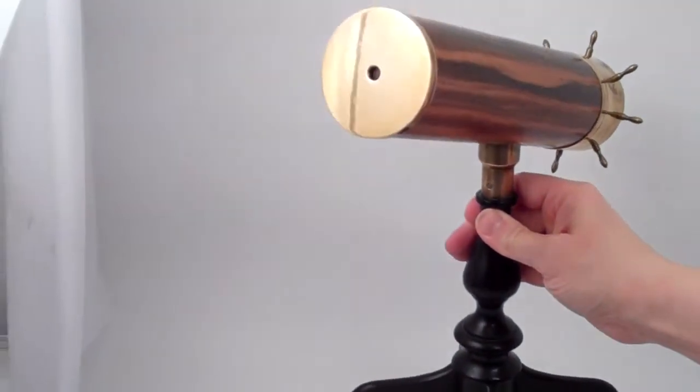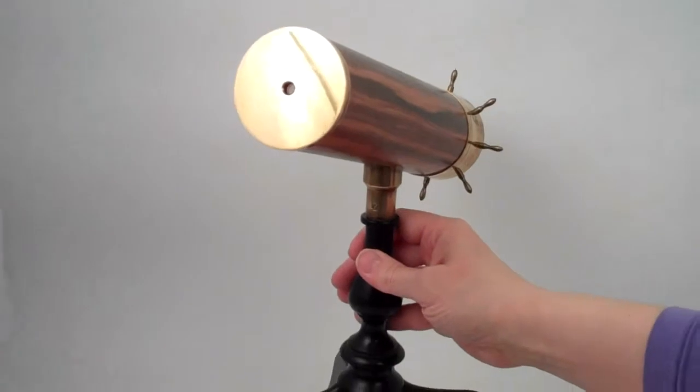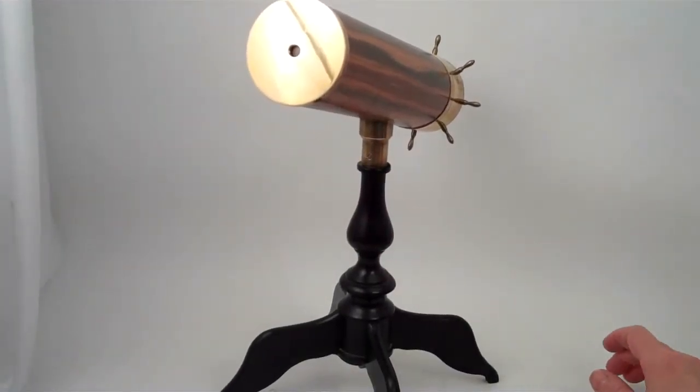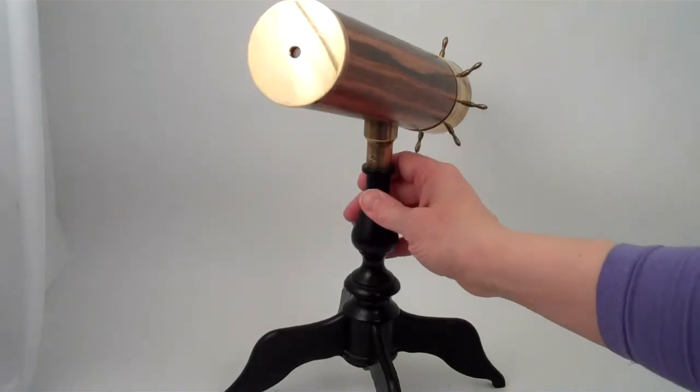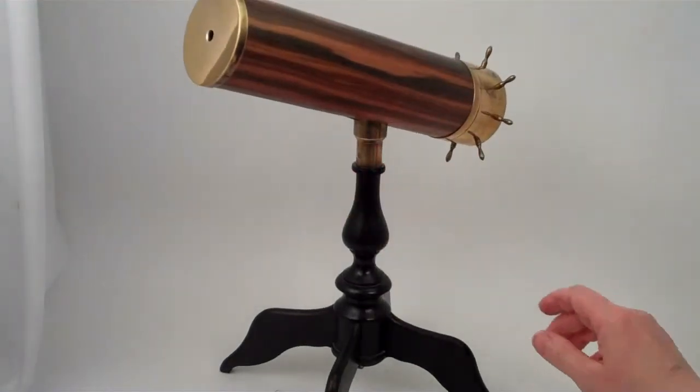This is a vintage Monarch kaleidoscope crafted at Van Cort Instrument Makers from 1986, and this kaleidoscope is currently available at Kaleidoscopes2U.